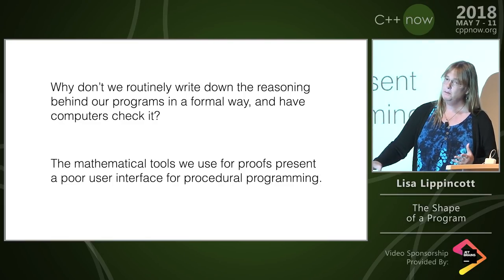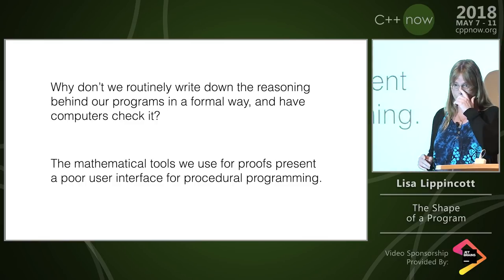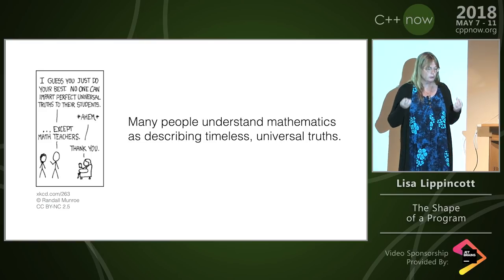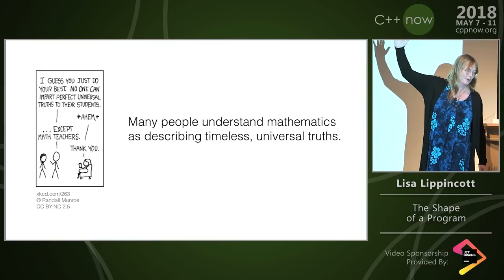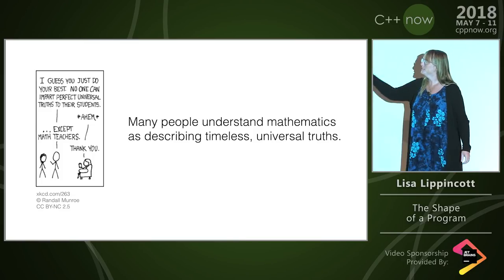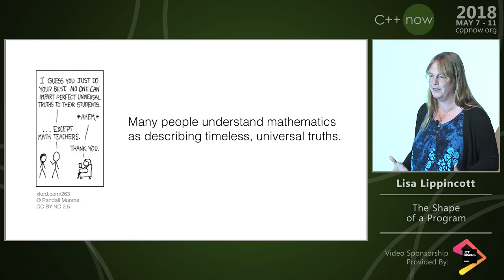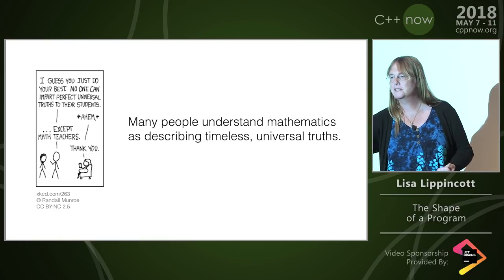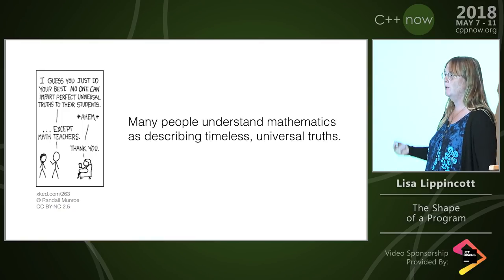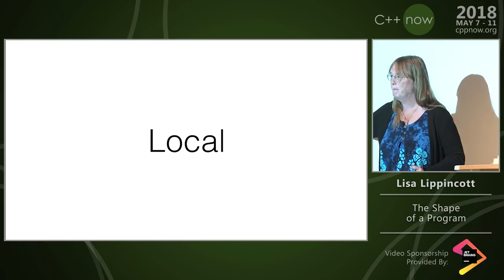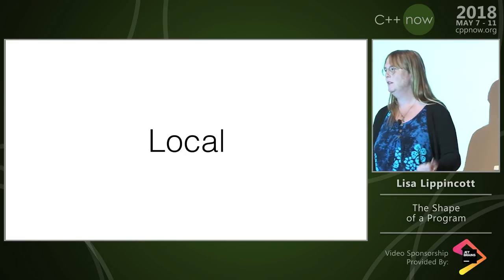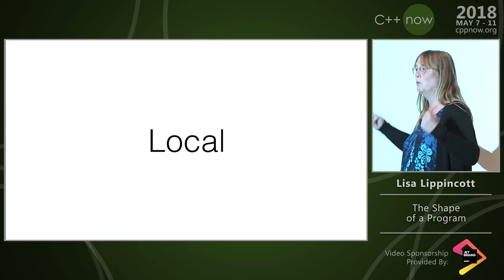I think this may come down in part to a common attitude about math: many people understand math as describing timeless, universal truths. Timeless and universal are the go-to qualities in math. Programming, on the other hand, is all about the specific — connecting particular events together, having them happen at particular places and times. And when we write programs, our watchword is local. Everything that's good about programming style is about local.